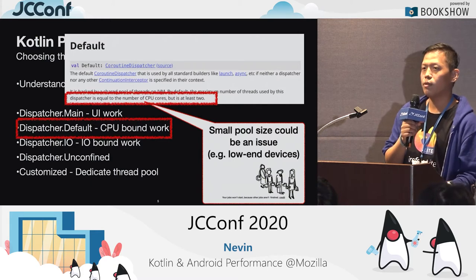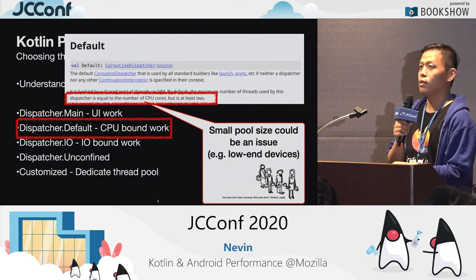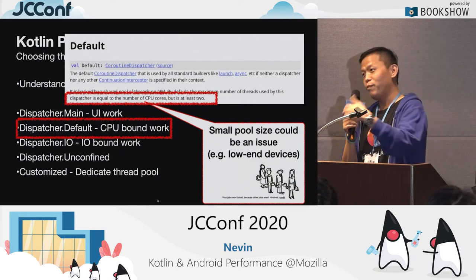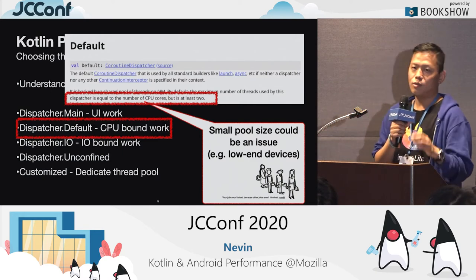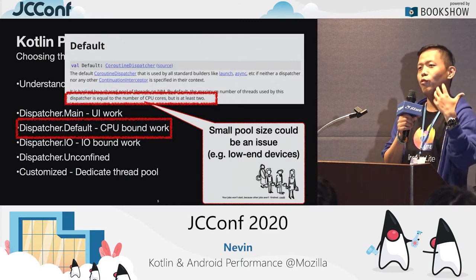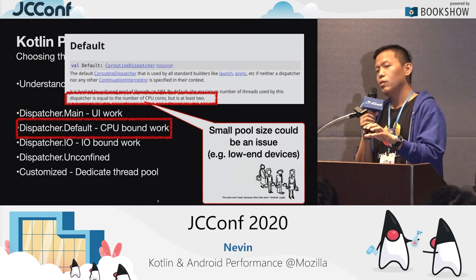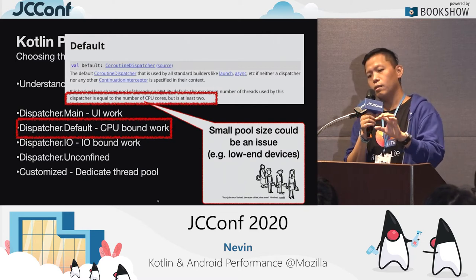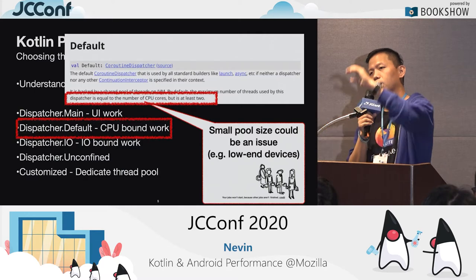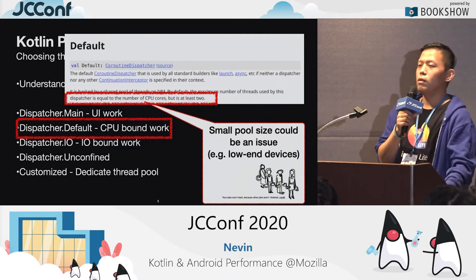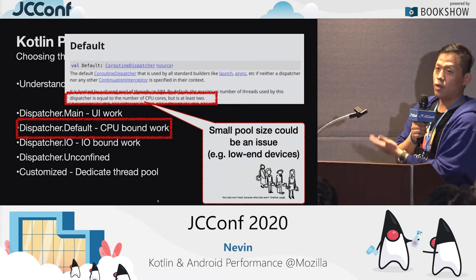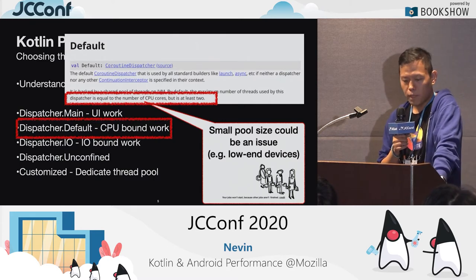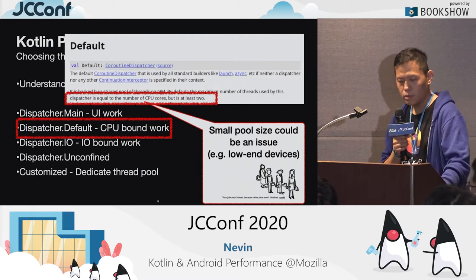Sometimes library developers put library initialization in content providers, because content providers are initialized before your application gets created. If you're not sure how many content providers are injected into your app, you can go to Android Studio's merged Android manifest and see the final manifest and where they come from. For example, Firebase and Crashlytics do the same thing — you'll have two additional content providers added.